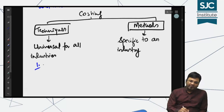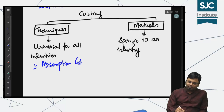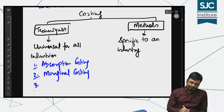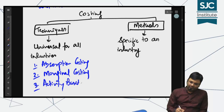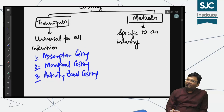Techniques of costing में number one आ रहा है absorption costing, number two है marginal costing — यह सब आपका syllabus बनता है — और number three है activity based costing। मतलब अगर यह सब सीख लिया तो आपका किसी भी industry में costing करने का बुद्धि आ गया।